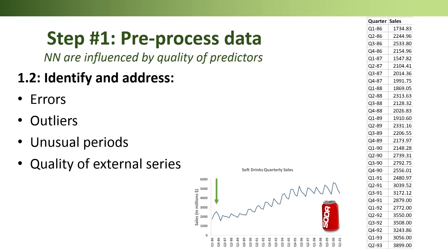Furthermore, if you examine the actual data, you'll discover that many of the values have no decimal digits while others do. This is suspicious — maybe the integer numbers are rounded up? A neural network can be influenced by such data quality issues.